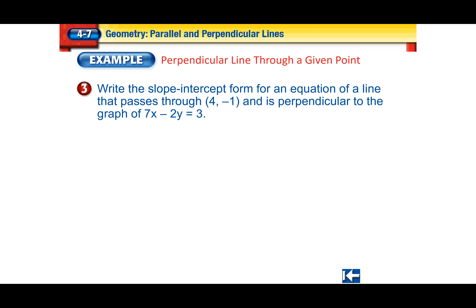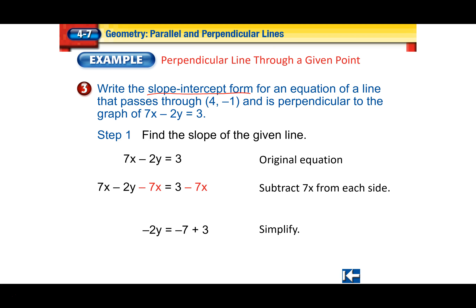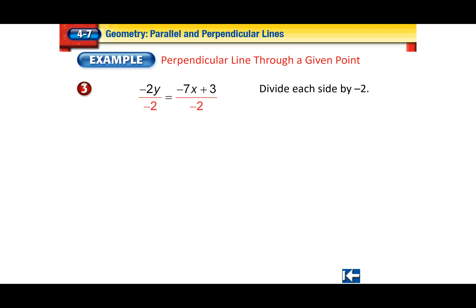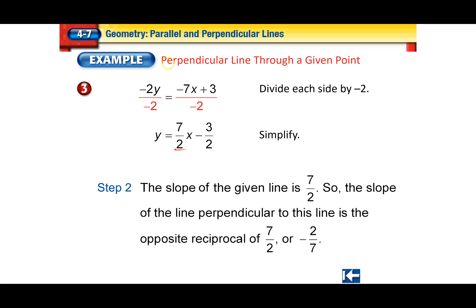A perpendicular line through a given point: write in slope-intercept form an equation that passes through a given point and is perpendicular to a given line. First, find the slope of the given line by putting it into y equals mx plus b form. Subtract 7x from both sides, then divide both sides by negative 2 and simplify. We only really need the slope. To find a perpendicular line, take the negative reciprocal: flip 7 over 2 and multiply by negative 1, giving negative 2 over 7.